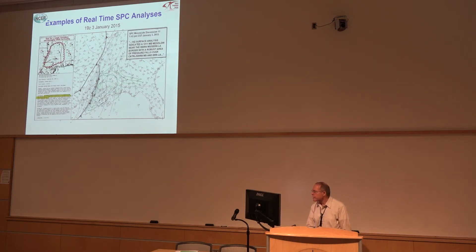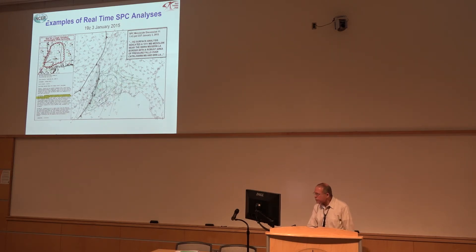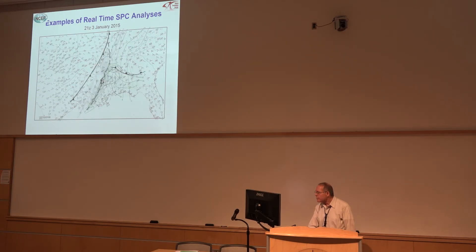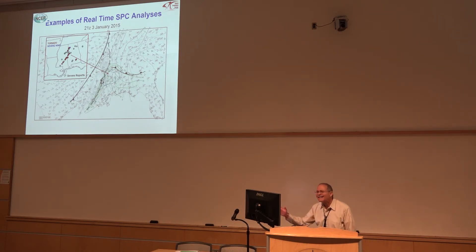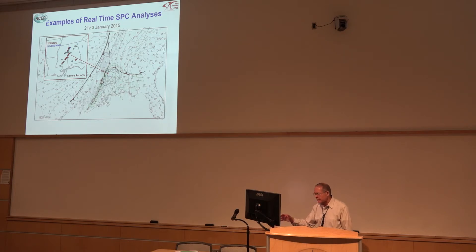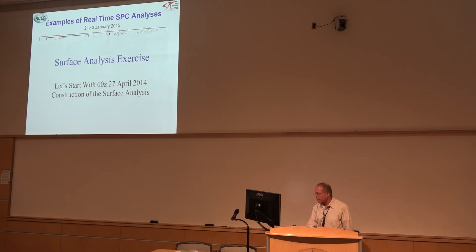Another mesoscale discussion talked about a meso-low and a robust area of pressure falls. Lo and behold, it was within this area, as these pressure falls tracked northeastward, that we had a series of tornadoes. So paying attention to the surface data and analyzing it in detail can be extremely helpful.